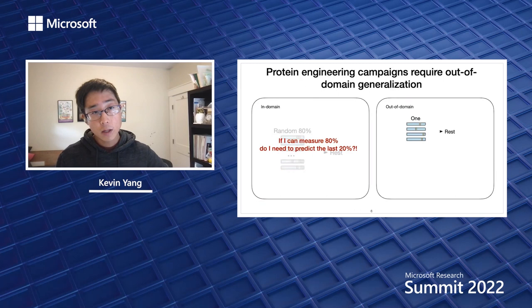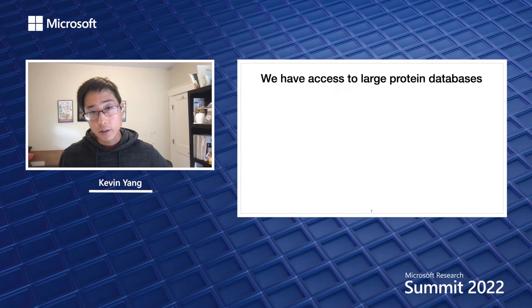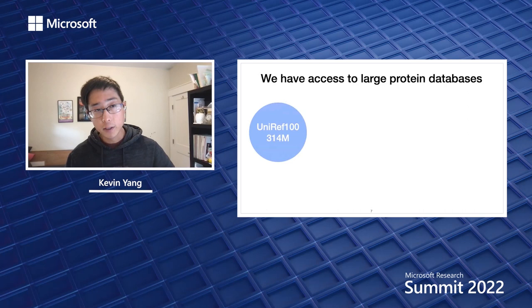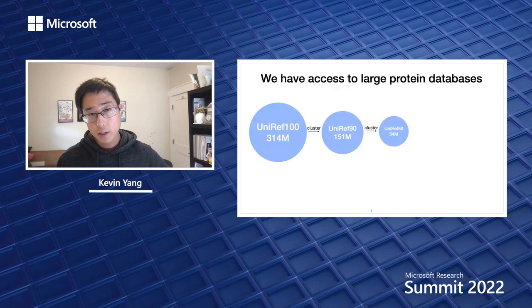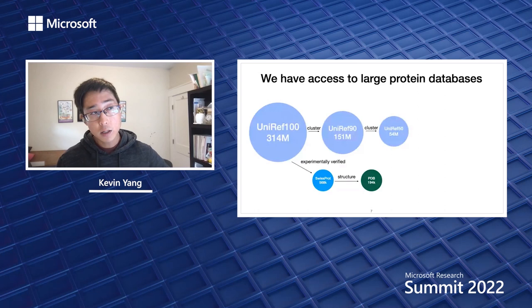To help with this, we have access to large protein databases, such as UniRef100 with about 314 million unique sequences. Clustering to 90% gives about 151 million; clustering to 50% gives about 54 million. If you want only experimentally verified proteins, SwissProt has about 568,000. If you want experimental 3D structures, we're down to about 194,000 — but that's still a lot more than the 200 measurements we made in our original protein engineering campaign.